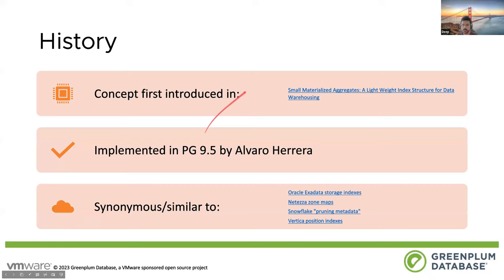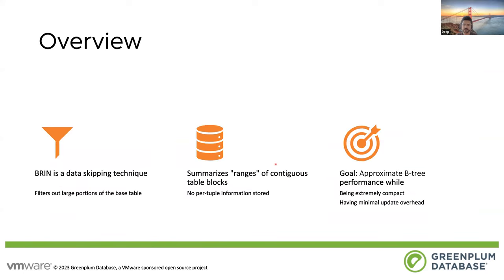Let's talk about the history of BRIN indexes for a second. This isn't a new thing. In fact, this paper that dates back to 1998 kind of came up with the idea. It's not known as BRIN specifically in the literature, but it is synonymous to a variety of things such as Exadata storage indexes, Netezza zone maps, Snowflake pruning metadata, and vertical position indexes. In many cases, the summary information is not maintained as a separate index, but it might sometimes be tied with the physical file. But the idea is the same: we store a bit of summary metadata for each block or range of blocks and use that during query execution. For Postgres, BRIN was introduced in 9.5 by Alvaro Herrera.